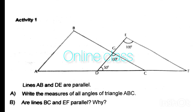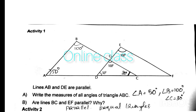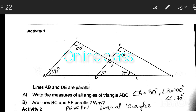Lines AB and DE are parallel. Write the measures of all angles of triangle ABC, and determine whether lines BC and EF are parallel. The angles of triangle ABC are: Angle A = 50 degrees, Angle B = 100 degrees, Angle C = 30 degrees.